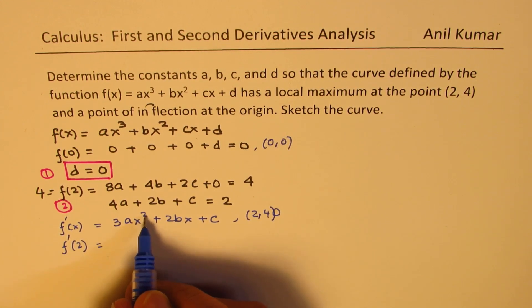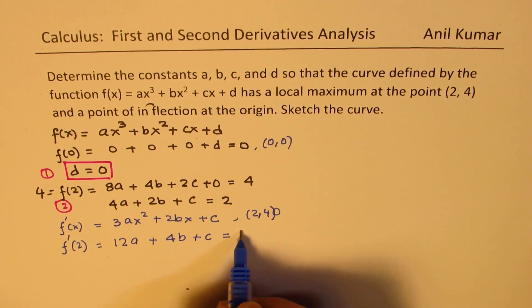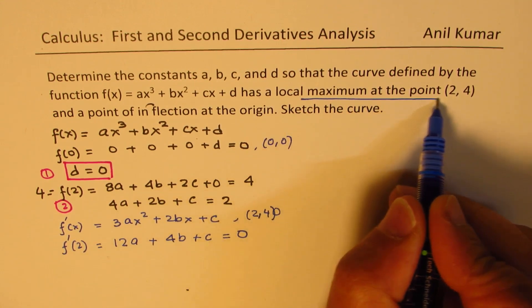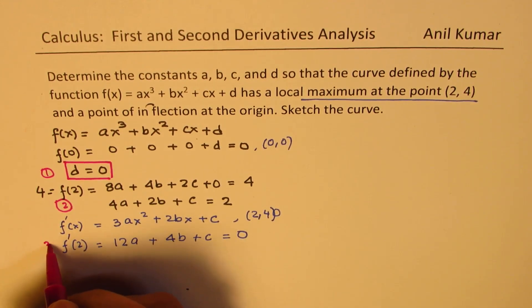So we get 12a + 4b + c. And this value should be equal to 0 since we have a maximum at (2, 4). So we get another equation. We'll call this as our equation number 3.